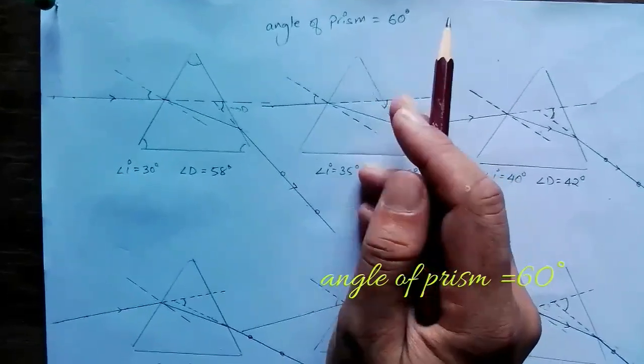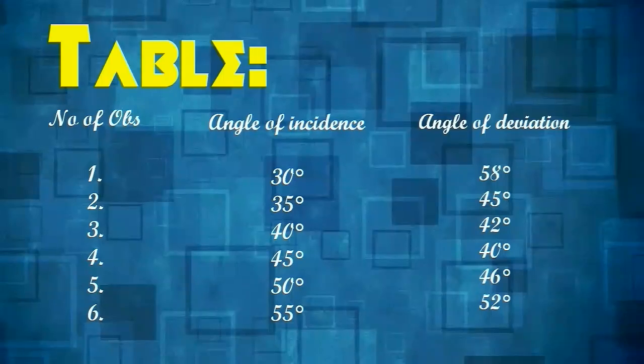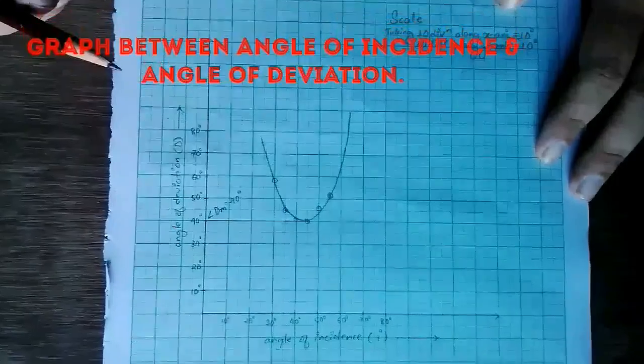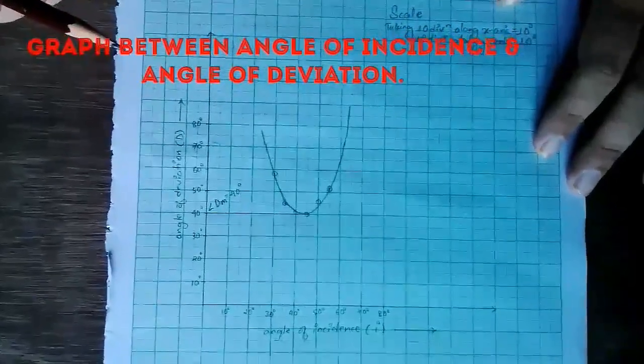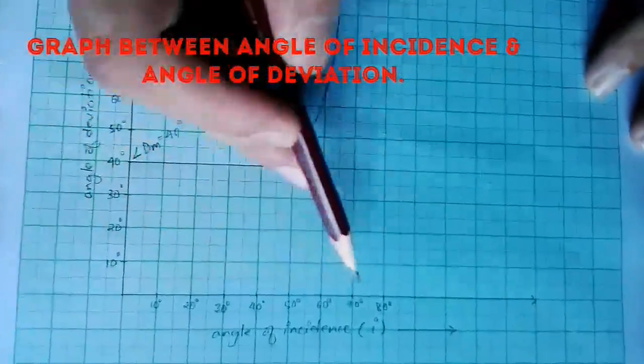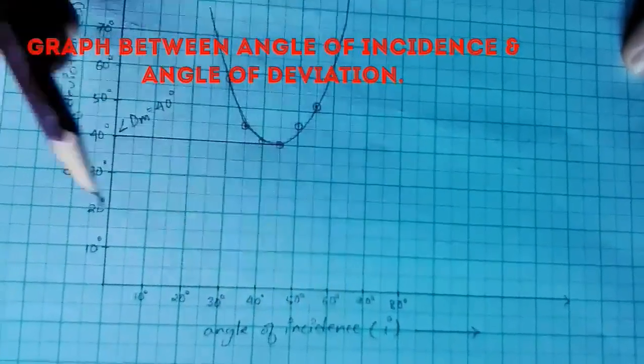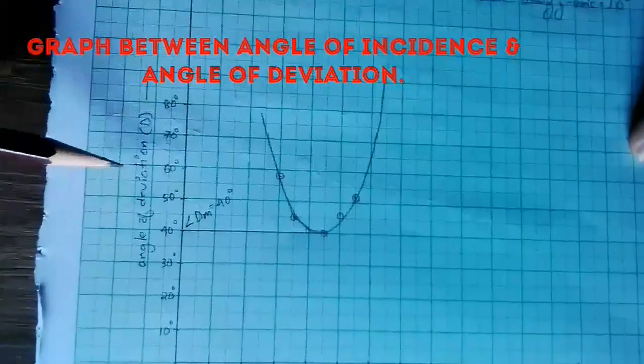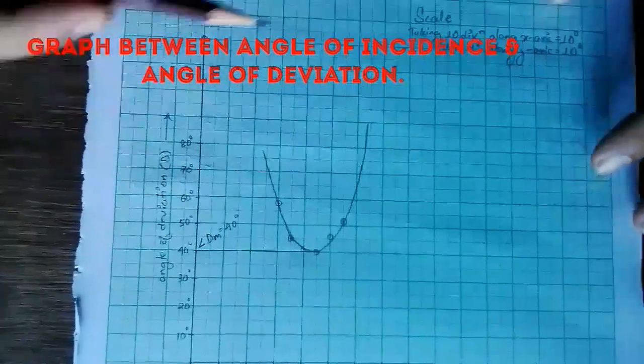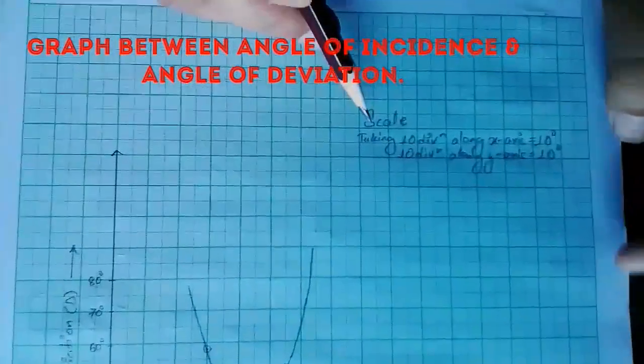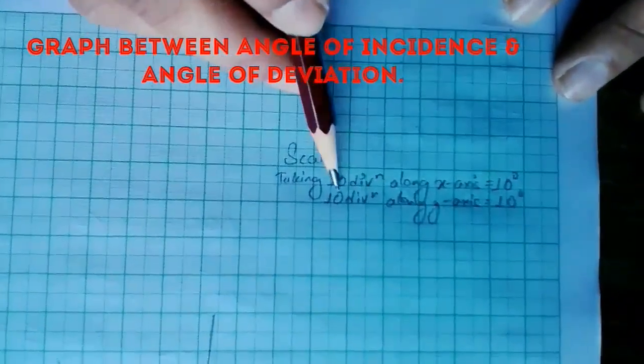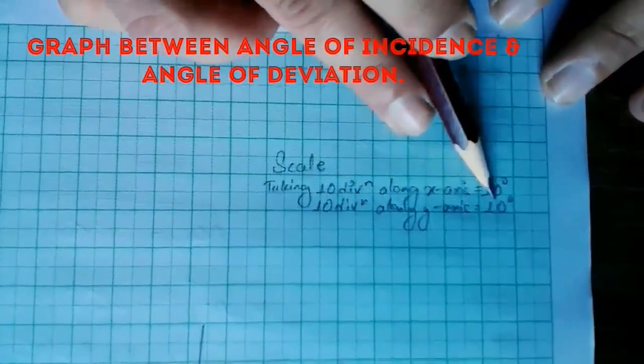Now we have to draw a graph between angle of incidence and angle of deviation. The x-axis represents the angle of incidence and the y-axis represents the angle of deviation. We take a proper scale: taking 10 divisions along x-axis equal to 10 degrees and 10 divisions along y-axis equal to 10 degrees.